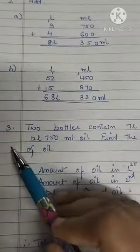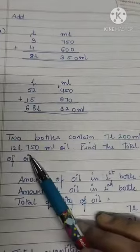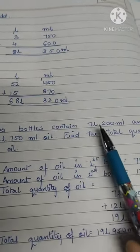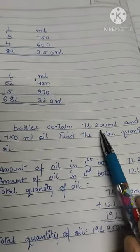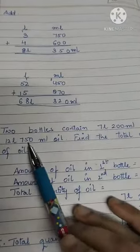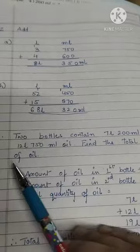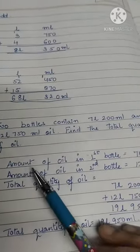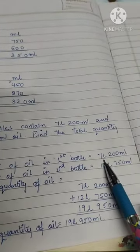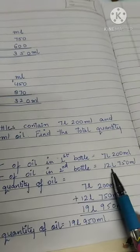Coming to question number three: Two bottles contain 7 liters 200 ml and 12 liters 750 ml oil. Do bottle hain jis mein pehle bottle mein 7 liter 200 ml oil hai and the second bottle contains 12 liters 750 ml oil. So what you have to do, you have to find the total quantity of the oil. So you will write: amount of oil in first bottle is 7 liters 200 ml, then amount of oil in second bottle is 12 liters 750 ml.